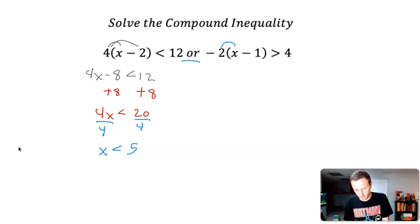So now I'm going to solve this one. I'm going to distribute the negative 2 into the parentheses. Negative 2 times x is negative 2x. Negative 2 times negative 1 is a positive 2, greater than 4. I'm going to solve for x by subtracting 2 from here. So I'm left with negative 2x greater than 2.